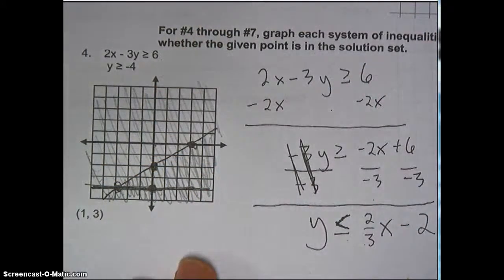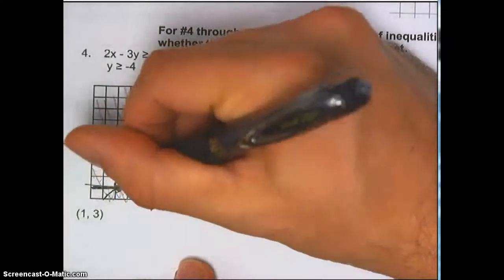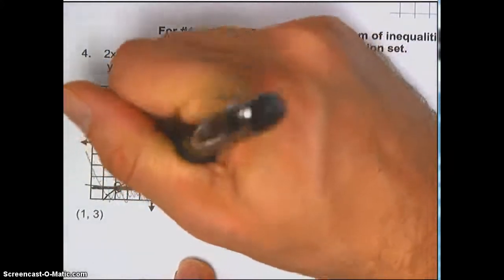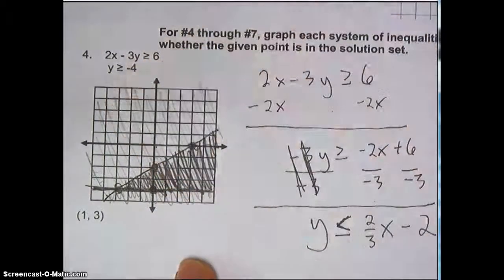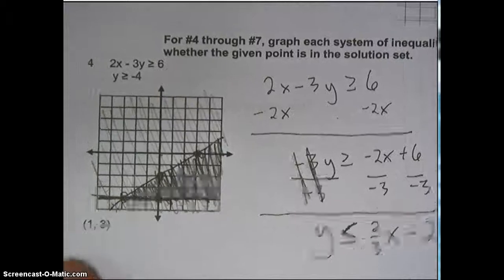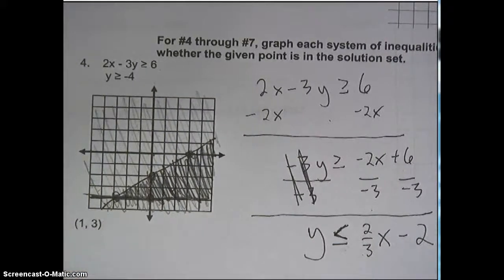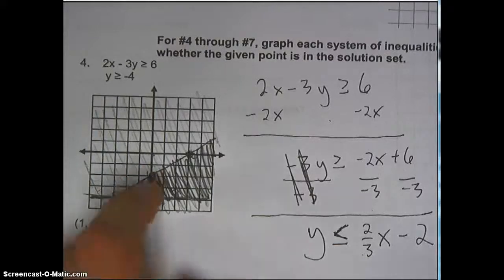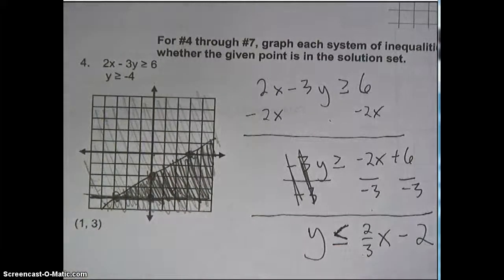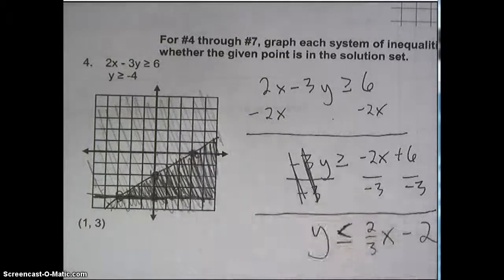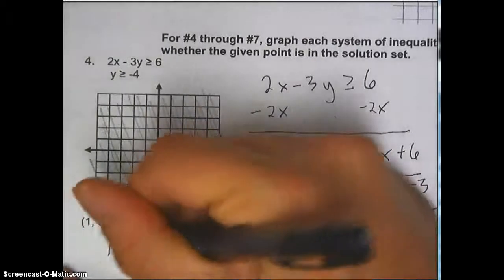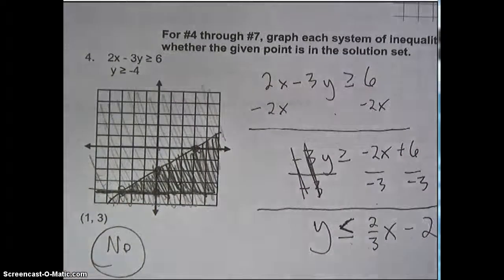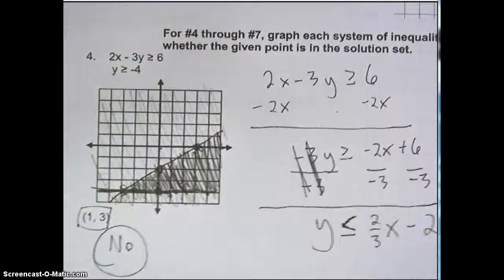So the question is: which region did I shade twice? The area that I shaded twice is right here — that's the solution set. The area that you shade twice is the solution set. Or if there are three equations, it's the area you shade three times. So is the point (1, 3) in the solution set? No — it only satisfies that one equation. It doesn't satisfy both equations. The answer is no, it's not in the solution set.